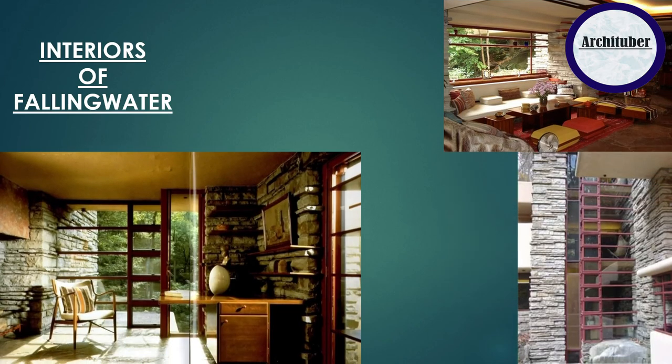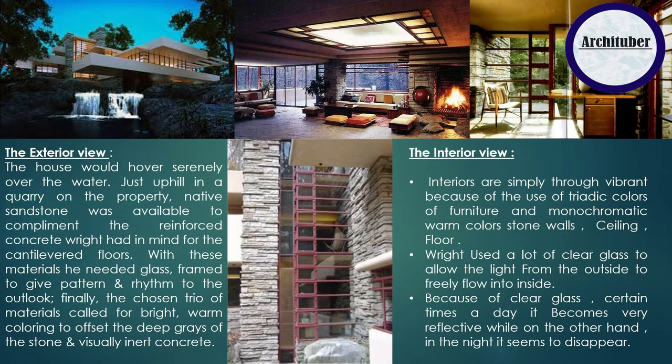Talking about the interior of Fallingwater — we discussed that Wright used only four materials on the exterior. The interiors feature vibrant yet monochromatic warm colors, sandstone on the ceiling and floor. Wright used a lot of clear glass to allow light from outside to freely flow inside; at certain times of the day the glass becomes very reflective. You can see the ceiling and the overall view gives a harmony with nature.